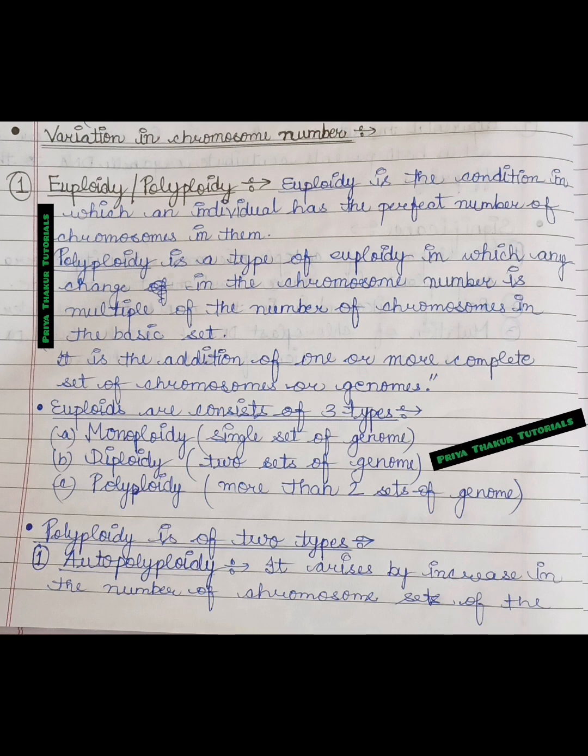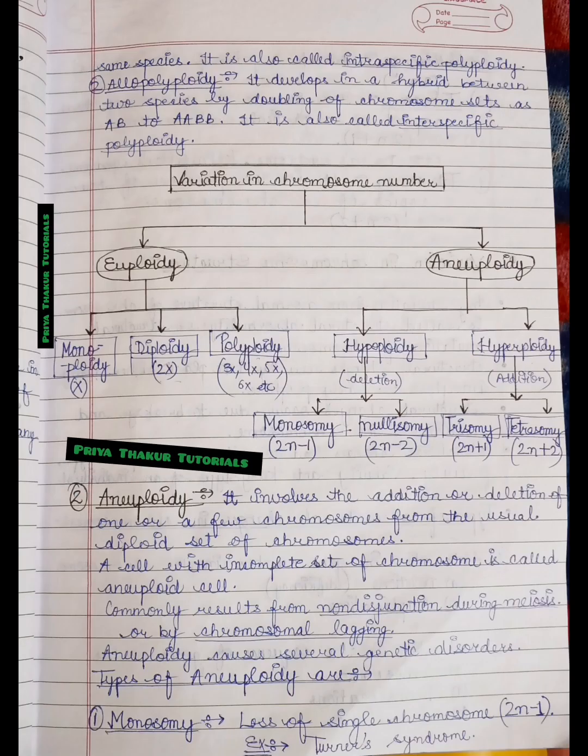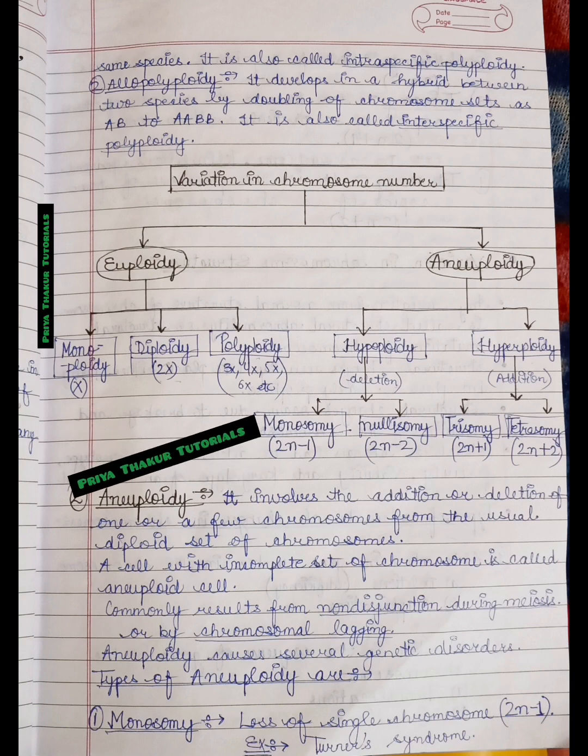Polyploidy is of two types. Polyploidy has further two types: autopolyploidy and allopolyploidy. Autopolyploidy arises by increase in the number of chromosome sets of the same species, and it is also called intraspecific polyploidy. The second type is allopolyploidy. It develops in a hybrid between two species by doubling of chromosome sets as AB to double A, double B. In allopolyploidy, chromosome sets are doubled. If AB chromosome set is there, after doubling it becomes double A, double B set. It is also called interspecific polyploidy.